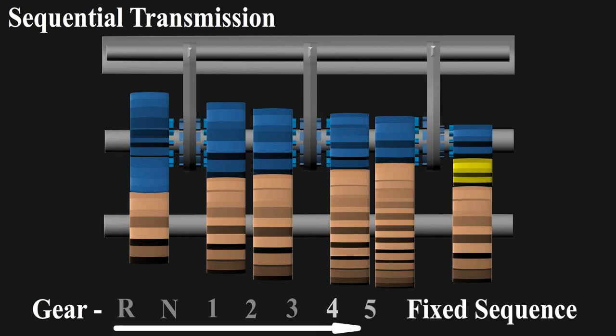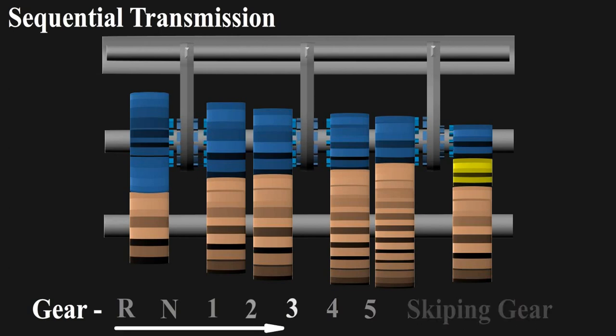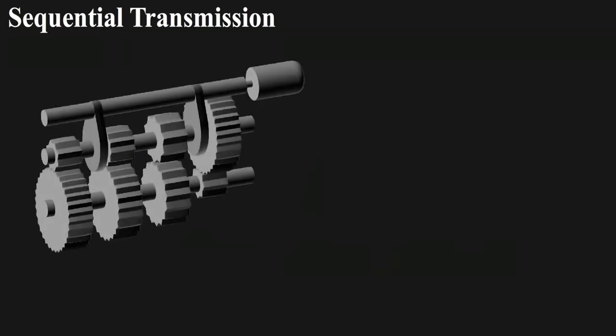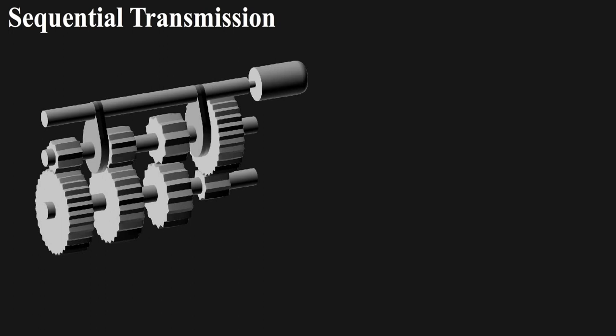This means shifting to any consecutive gear is possible, but skipping gears as in manual is not. The interesting thing to note here is that the gear shifts take place just by rotating one shaft, and just by rotating it at different angles, you can obtain different speed ratios.